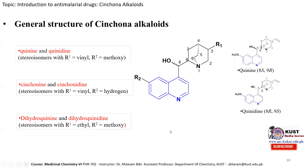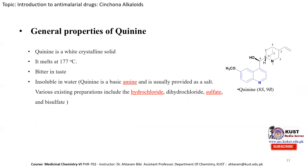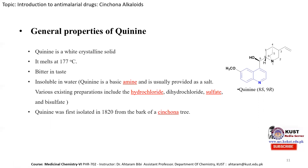General properties of quinine: quinine is a white crystalline solid melting at 177°C, very bitter in taste, and insoluble in water. As quinine is a basic amine, it is usually provided as a salt — hydrochloride, sulfate, or bisulfate — because salts are soluble in water. Quinine was first isolated in 1820 from the bark of the cinchona tree. Since quinine and quinidine are stereoisomers, their physical properties are similar; they differ only in their interaction with other chiral molecules.